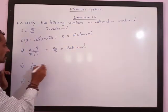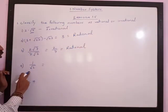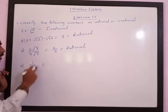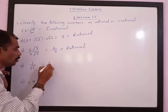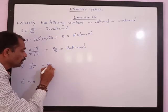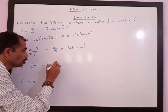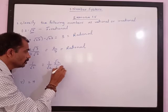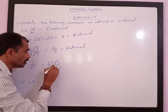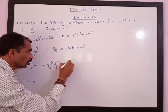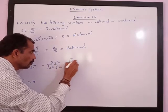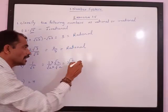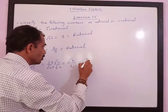Next is 1 upon root 2. If you multiply 1 upon root 2 by root 2, we will get root 2 upon 2. It means this is an irrational number.